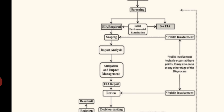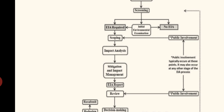If EIA is required, the next stage is scoping. In the scoping stage, we have public involvement — this is the first stage where public interaction happens. We will be discussing with the public the purpose of the particular project and what the environmental impact will be. Even minute details are discussed at this stage.